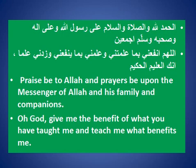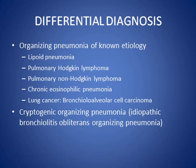We will mention the main causes and some examples, and the clues to the diagnosis. The main differential diagnosis includes organizing pneumonia from lipoid pneumonia, Hodgkin lymphoma, chronic eosinophilic pneumonia, lung cancer, or organizing pneumonia from unknown cause, which is called cryptogenic organizing pneumonia, or idiopathic bronchiolitis obliterans organizing pneumonia.